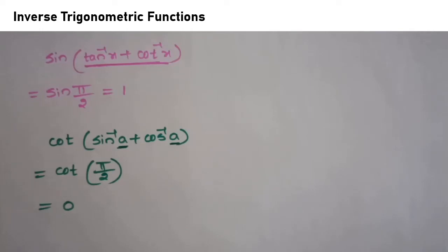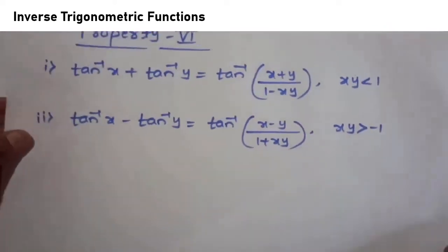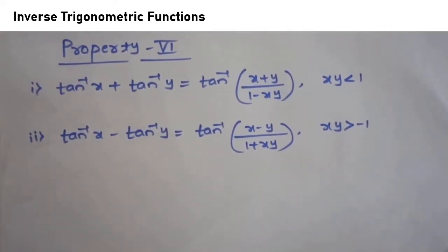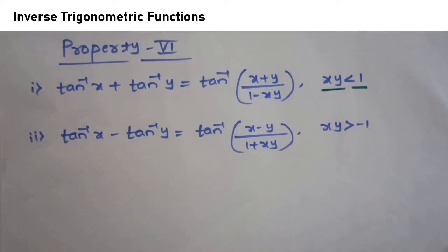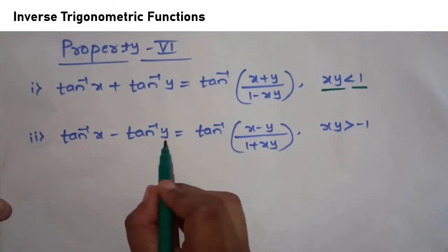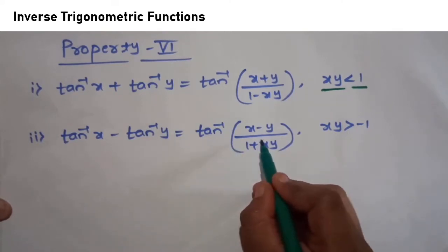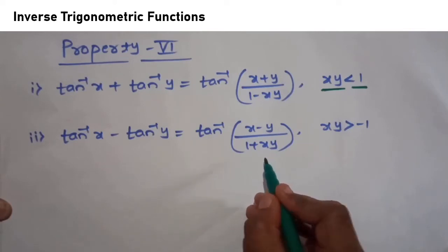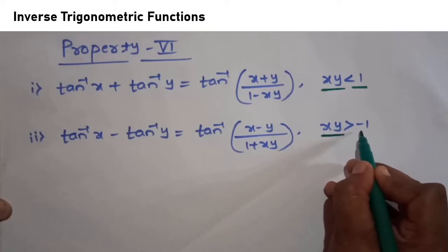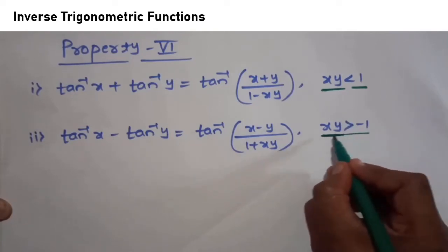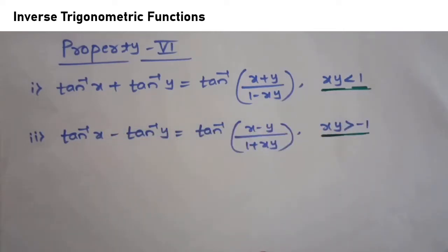Now we'll go to the sixth set of properties. The first property is tan⁻¹x + tan⁻¹y = tan⁻¹((x + y)/(1 − xy)), where the product xy < 1. The second property is tan⁻¹x − tan⁻¹y = tan⁻¹((x − y)/(1 + xy)), where the product xy > −1.